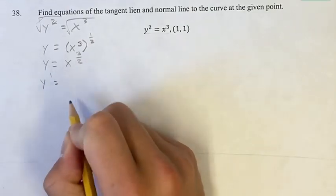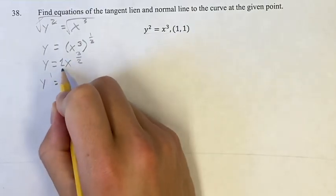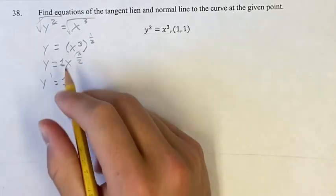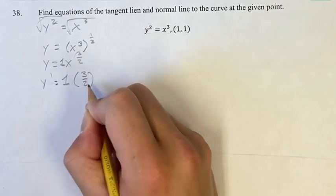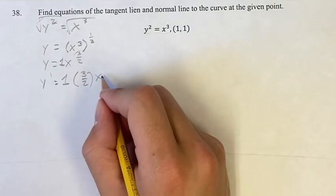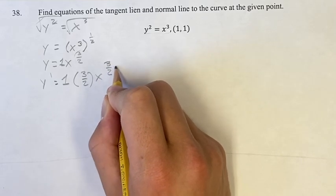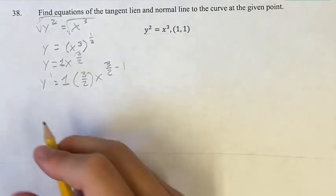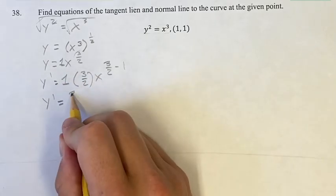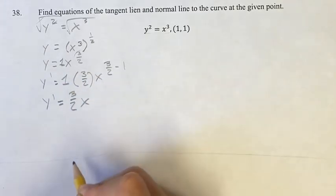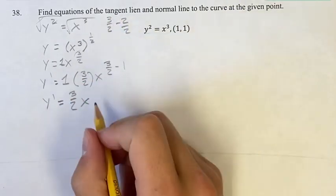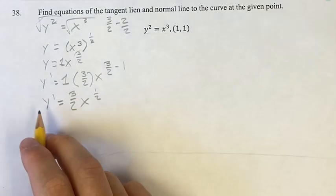So y prime is equal to — if we imagine a little invisible one there as the coefficient, we can write that out in front. Then we take the exponent, three-halves, bring that down, and multiply it by your coefficient. Your new exponent is the old one, three-halves minus one. So our derivative is y prime equals one times three-halves, which is just three-halves, times x to the three-halves minus one, which is three-halves minus two-halves, so it's going to be x to the one-half.